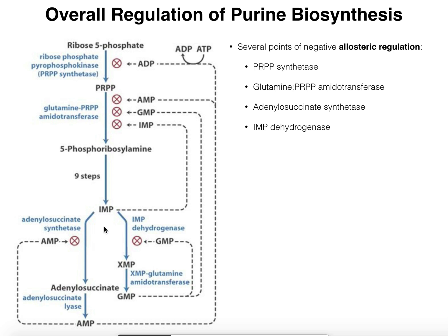When AMP accumulates, it comes back and inhibits its own synthesis by allosterically inhibiting adenylosuccinate synthetase, which effectively shuts down its own synthesis and allows IMP to be diverted toward GMP. The reverse is also true: GMP inhibits its own synthesis by allosterically inhibiting IMP dehydrogenase. If you have too many G's, shut down GMP synthesis and divert IMP toward making more AMP — again, to balance the total amount of nucleotides.